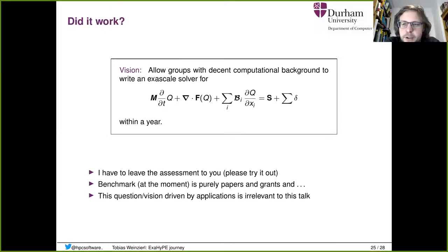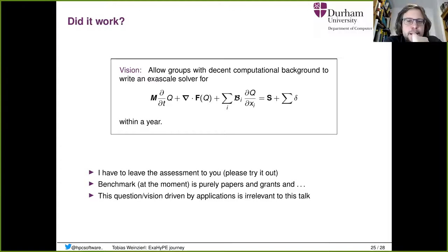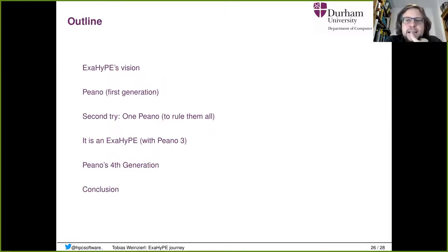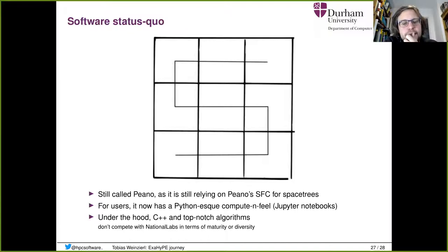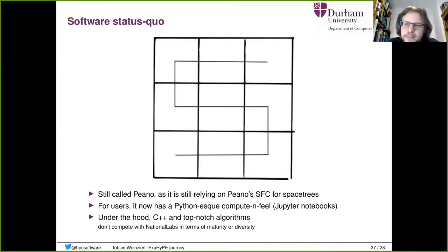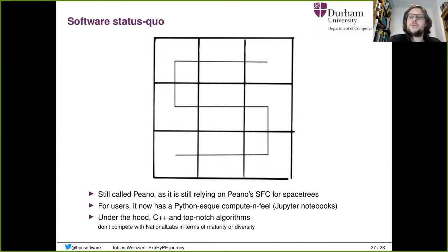Whether the current version works or not is somewhat irrelevant to this talk — let's look at the software side. We now have something with a Python-esque interface: you have Jupyter notebooks where you specify what you do, not how. Under the hood it's C++ and top-notch algorithms. We can't compete with national labs in terms of maturity and diversity, but we do very specific things and we want cool algorithms for those. That's our goal.